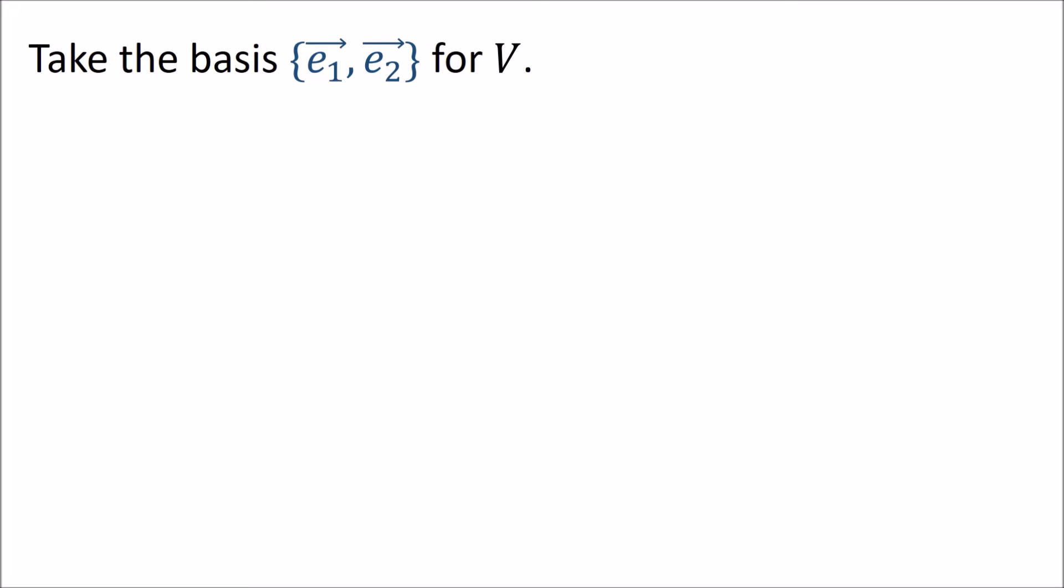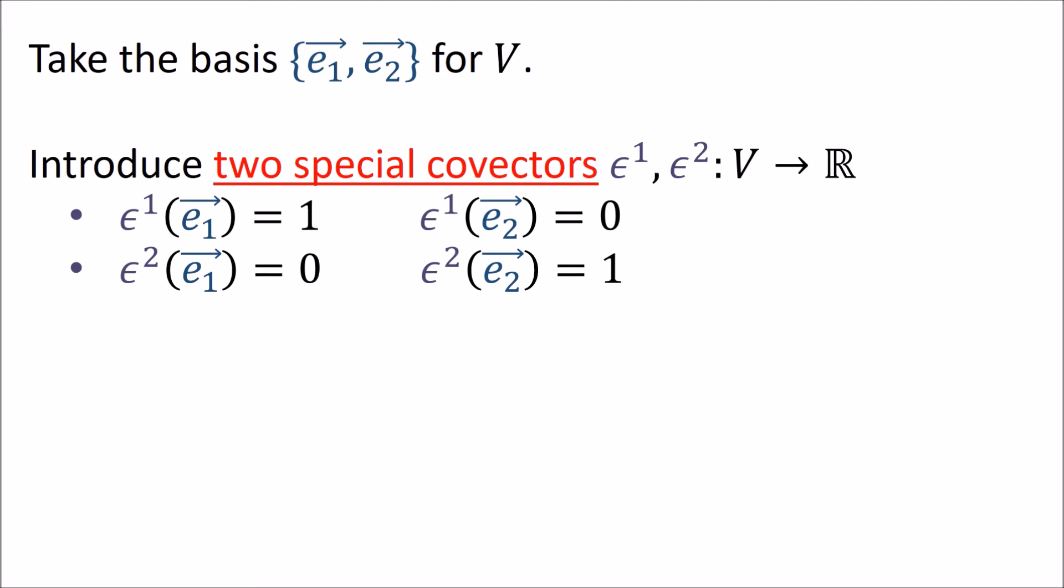What we're going to do is take a basis e₁, e₂ for V and introduce two special covectors epsilon 1 and epsilon 2, which are both functions from vectors to numbers. You'll notice I've put the labels 1, 2 above the covector instead of below. I did that on purpose and we'll get to why later.